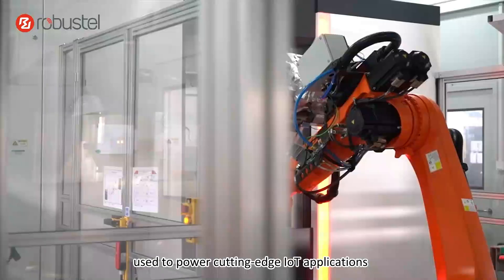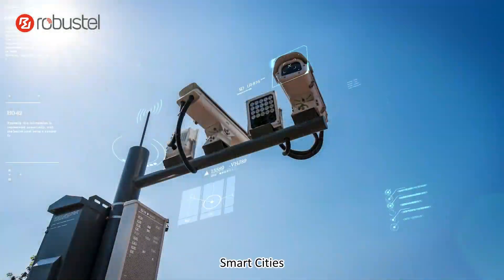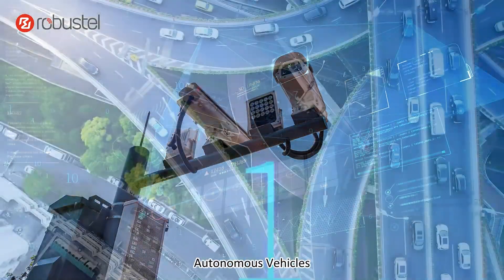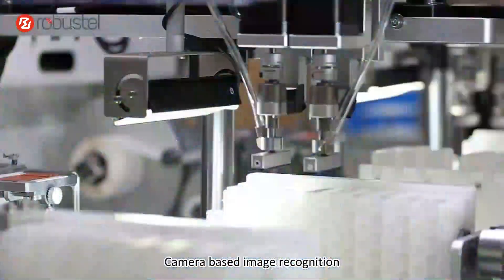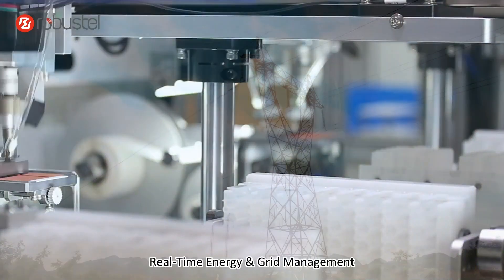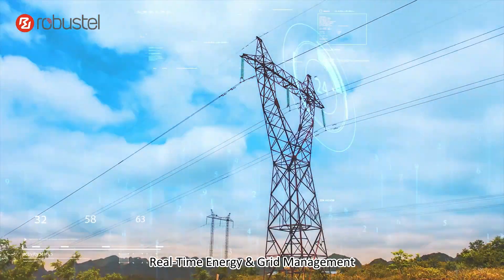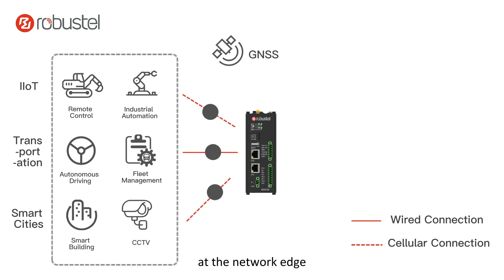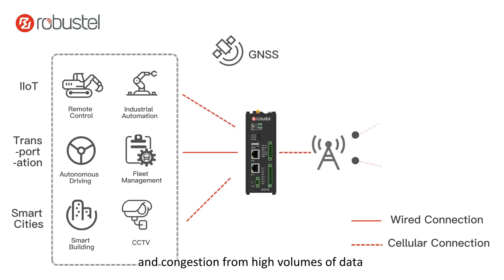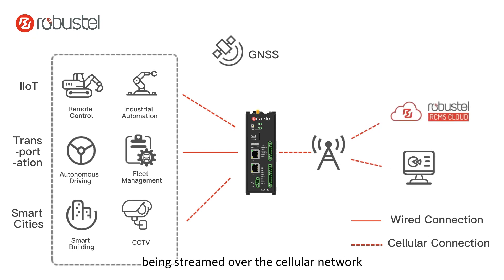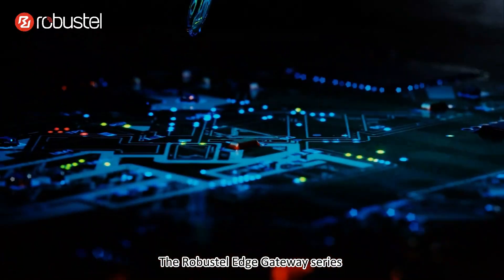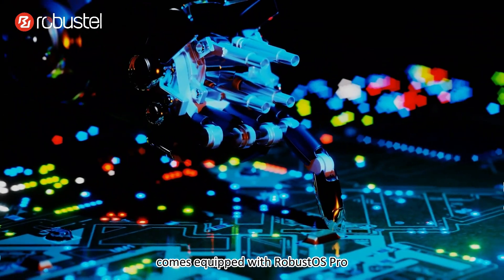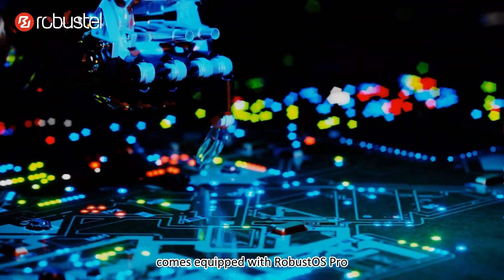The Robustle Edge Gateway Series can be used to power cutting-edge IoT applications like robotics, smart cities, autonomous vehicles, camera-based image recognition, and real-time energy and grid management, enabling data processing at the network edge to avoid unnecessary network noise and congestion from high volumes of data being streamed over the cellular network.